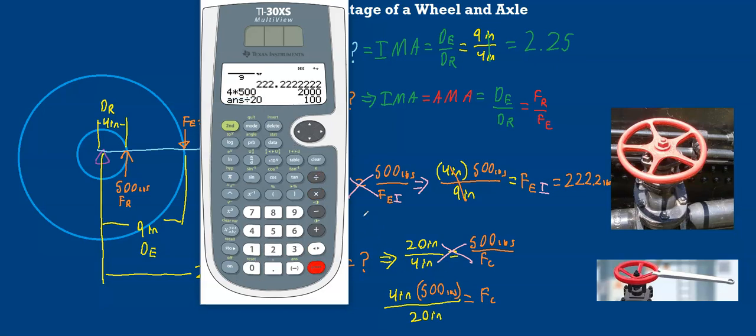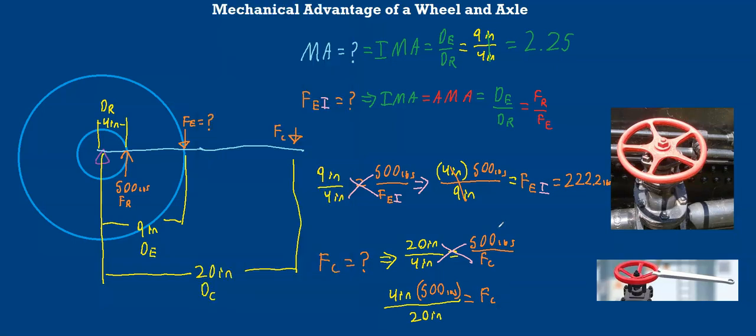And now we have a new effort force of only 100 pounds if we applied it to our cheater pipe or our valve wrench, which would be considerably less force than this 222 pounds we'd have to apply to the wheel directly. Of course, the disadvantage would be our force would have to travel a much farther distance to get this job done than if we just applied the force to the wheel itself.